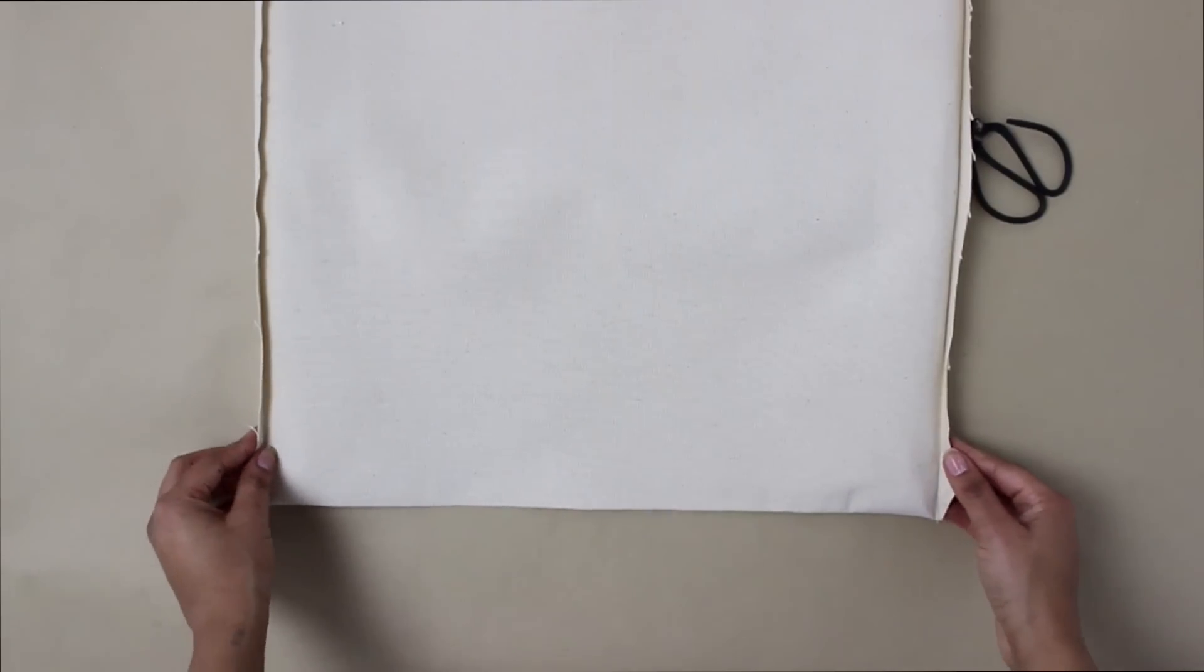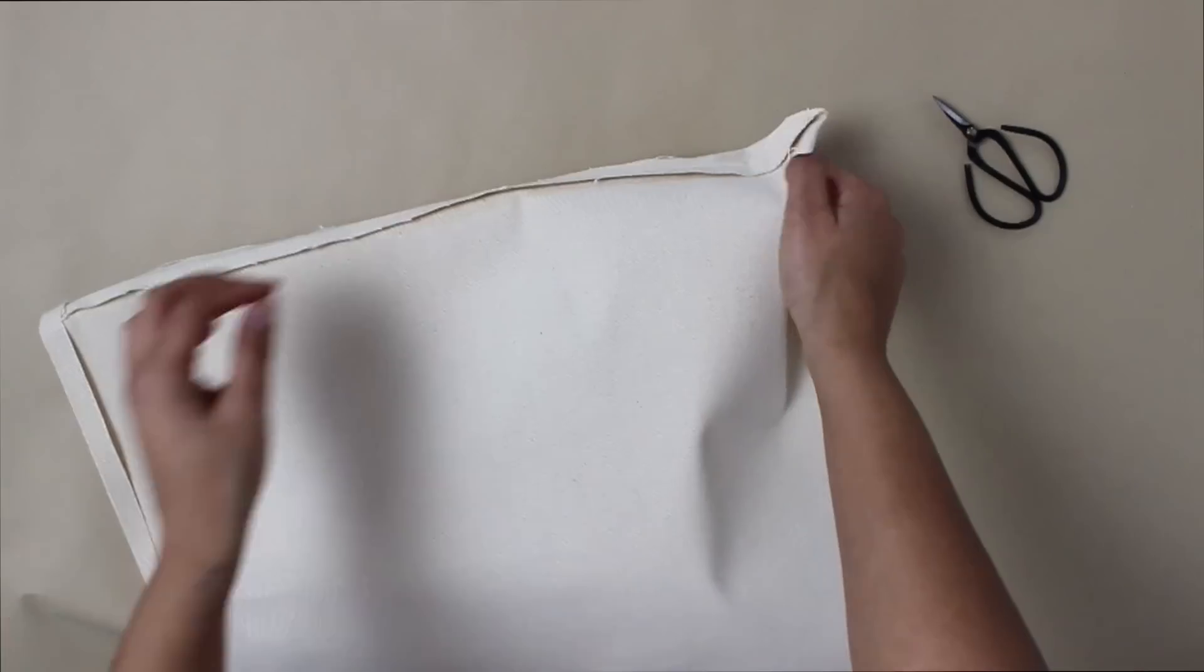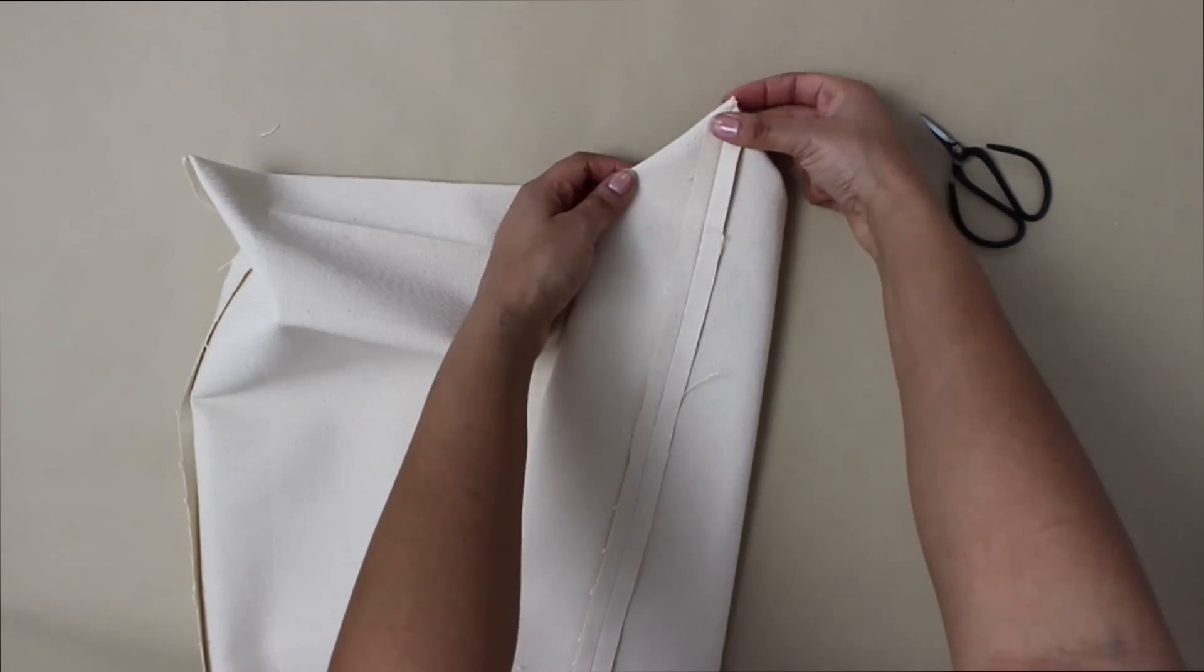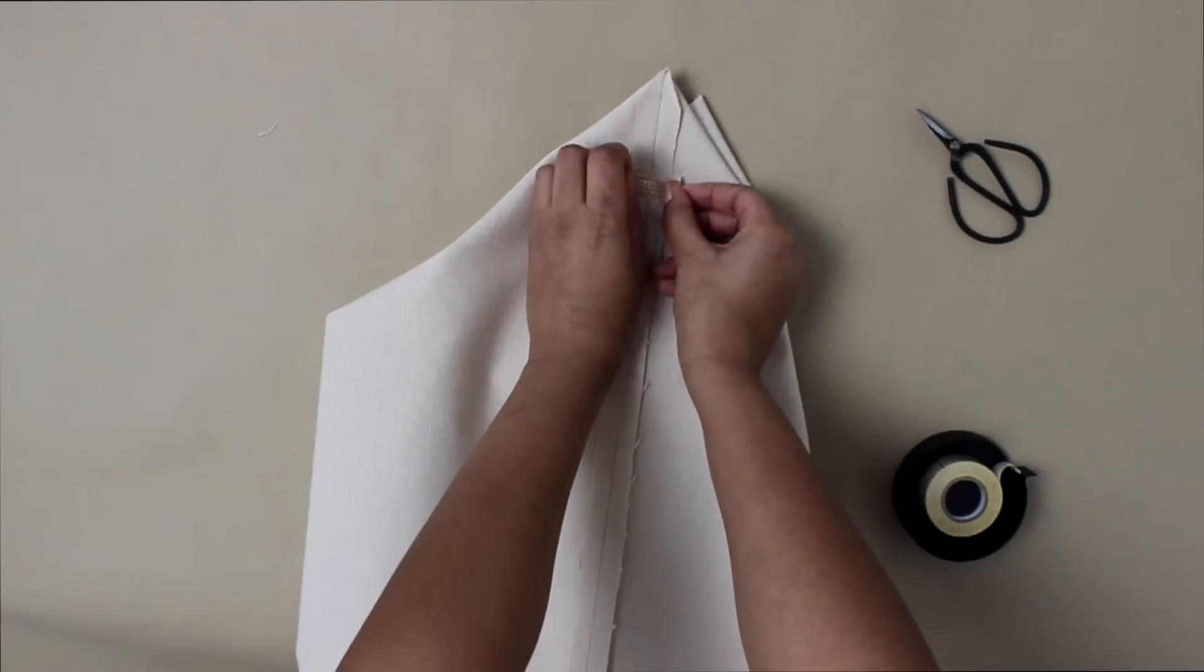So now what you want to do is kind of manipulate your bag so that your bottom seam lines up with the side seam. Then you want to mark and sew a perpendicular line. So now you'll basically have two triangle shapes on either side of your side seam.